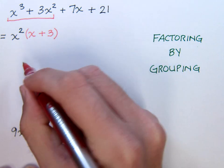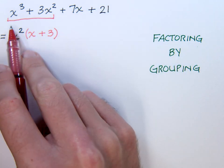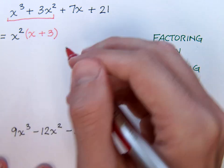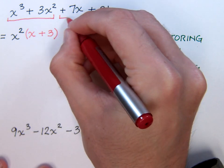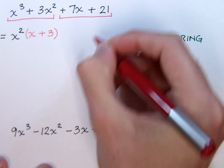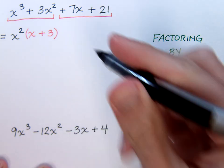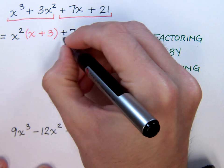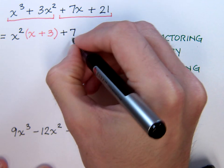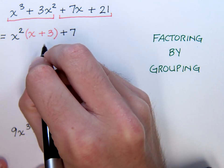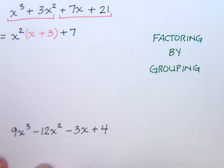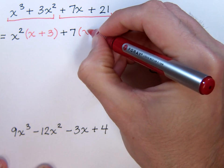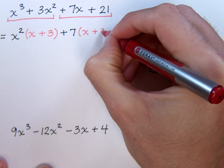You can easily check this by distributing the x squared back, and you're going to get x to the third plus three x squared. Moving along to the second group, we have a positive seven x and a positive twenty-one. The common factor in this group is a positive seven, and we need to write this plus seven, otherwise it would look like multiplication with the x plus three. If I take out the plus seven, I'm going to have x plus three again.